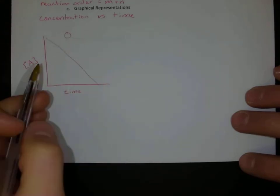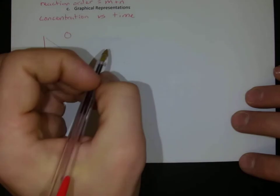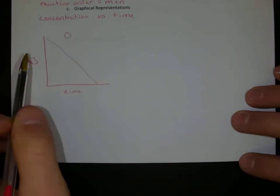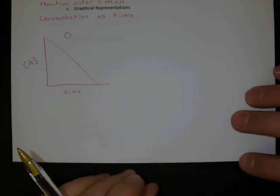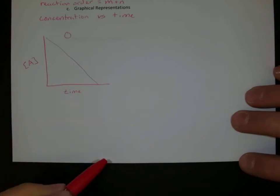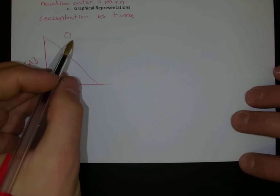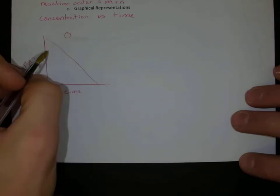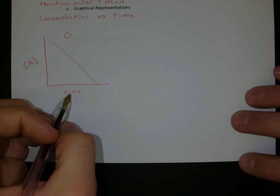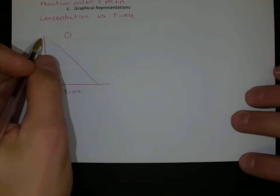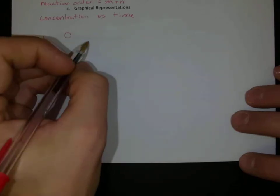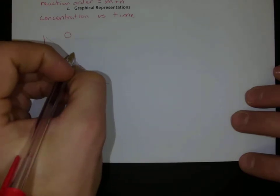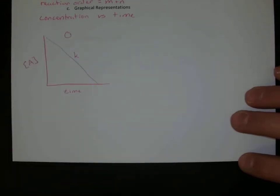But if I have something that is curved instead — if I've got a curved graph — then I don't actually know as much about what's happening with this reaction. But if we decide that this reaction is zero order because our concentration versus time graph is linear, the slope of our graph is going to be equal to K.